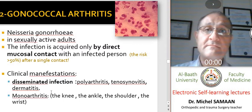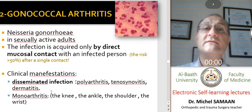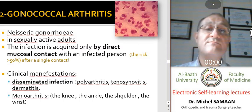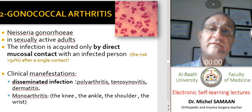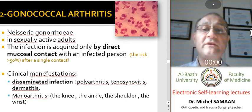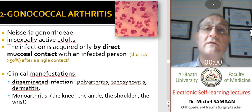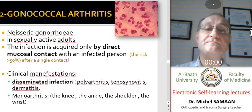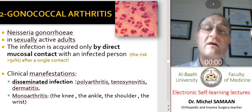Clinically, we may have disseminated infection presenting as polyarthritis, tenosynovitis, dermatitis, or monoarthritis, especially affecting the knee or other large joints such as the ankle, shoulder, and wrist. We should always suspect gonococcal infection when we have monoarthritis in sexually active adults.